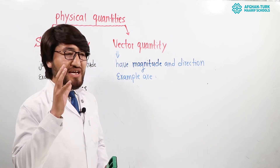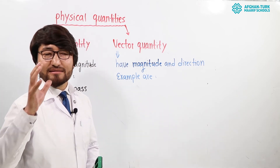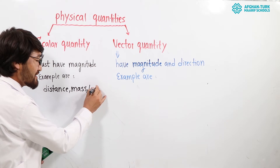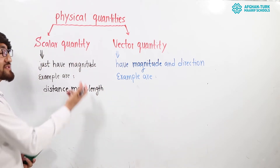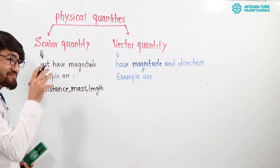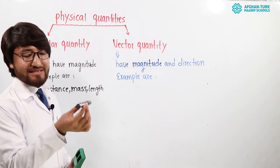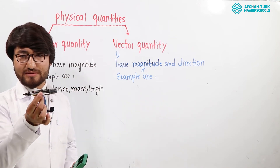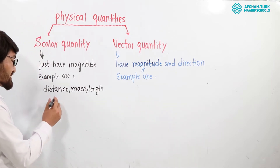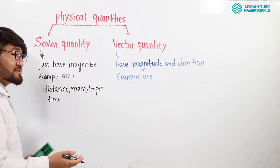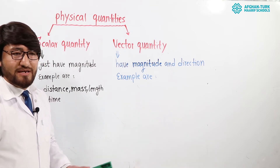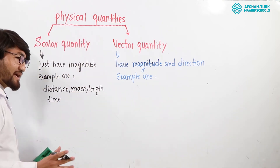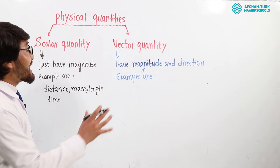Also, distance and length are scalar quantities because they have just magnitude. For example, the length of this marker is 10 centimeters — it has just magnitude, it doesn't have direction. Also, time is a scalar quantity. For example, the time is 2:30 — it just has magnitude.